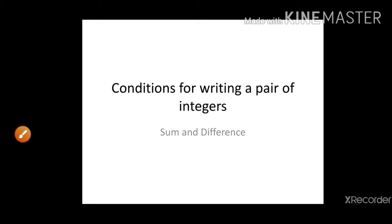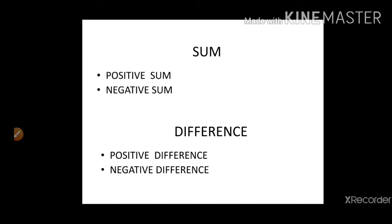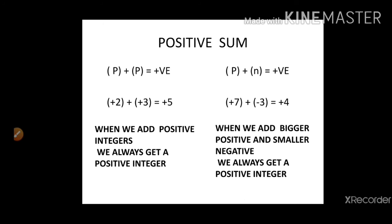Today we will study about conditions for writing a pair of integers to get a sum or a difference. Sum is the result of addition, so when we add two integers we will get either a positive or negative answer. Similarly, when we subtract two integers we can get a positive or negative answer. Let's start with a positive sum. The first way is positive plus positive — when we add two positives, we always get a positive answer. For example, plus 2 and plus 3 gives five positives.